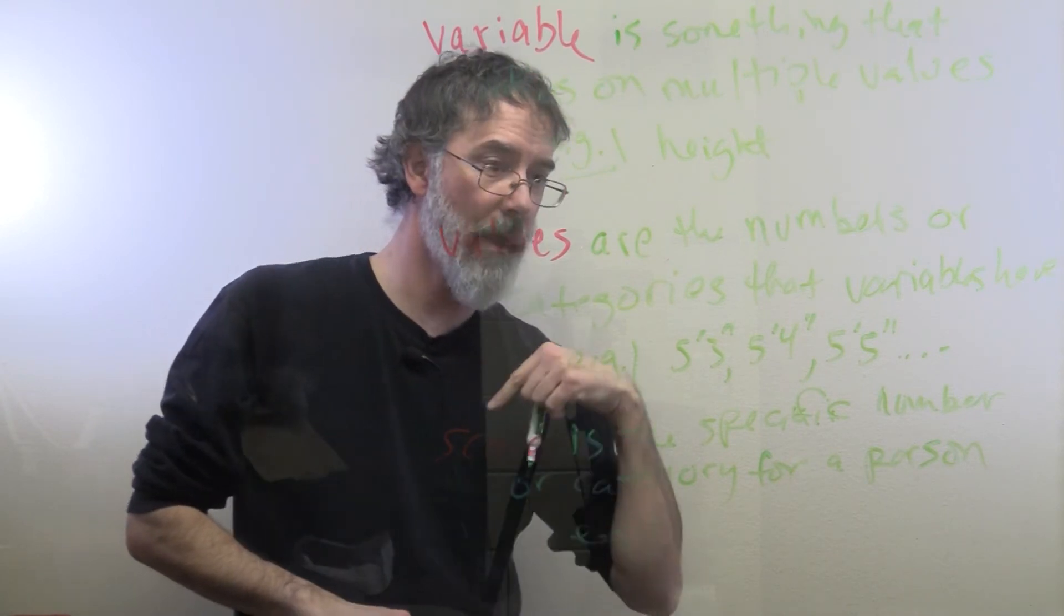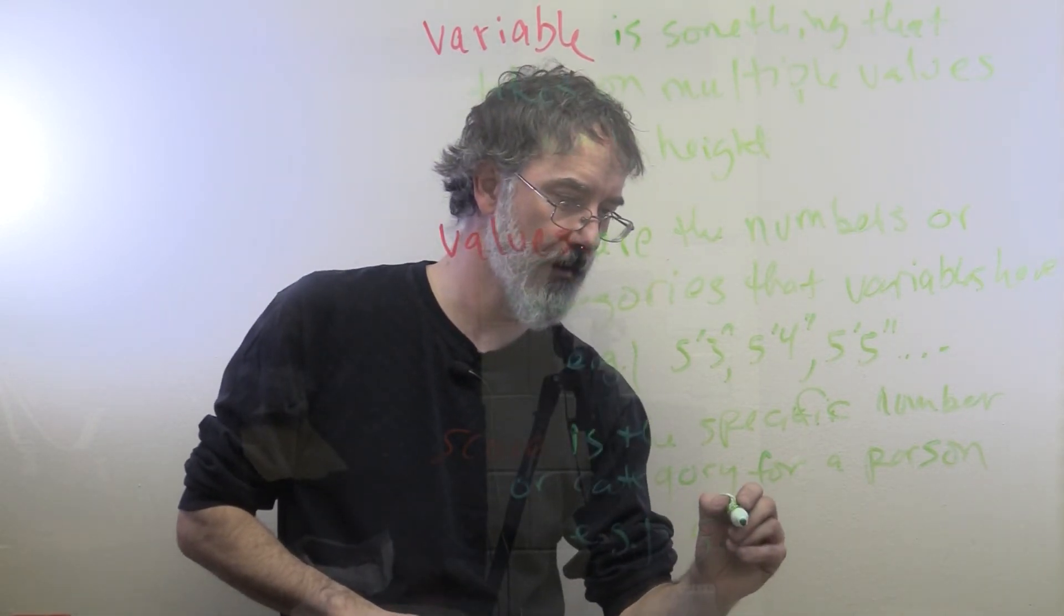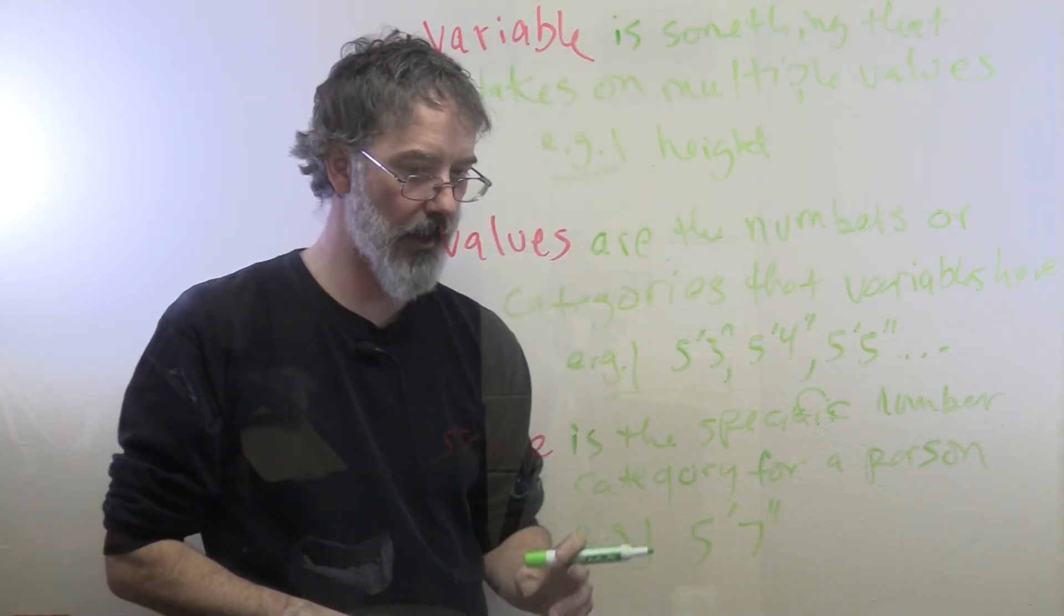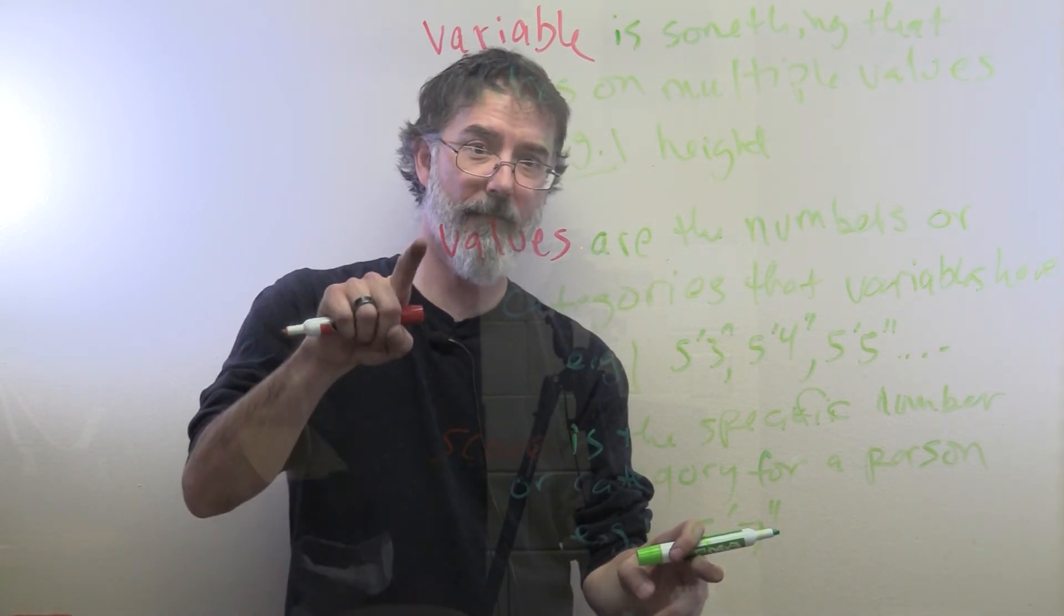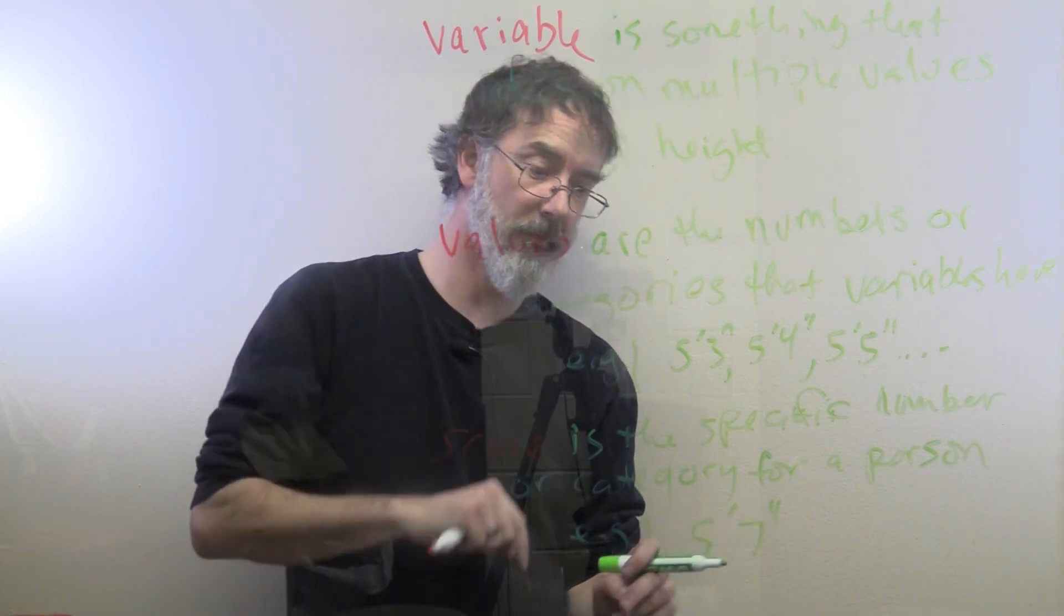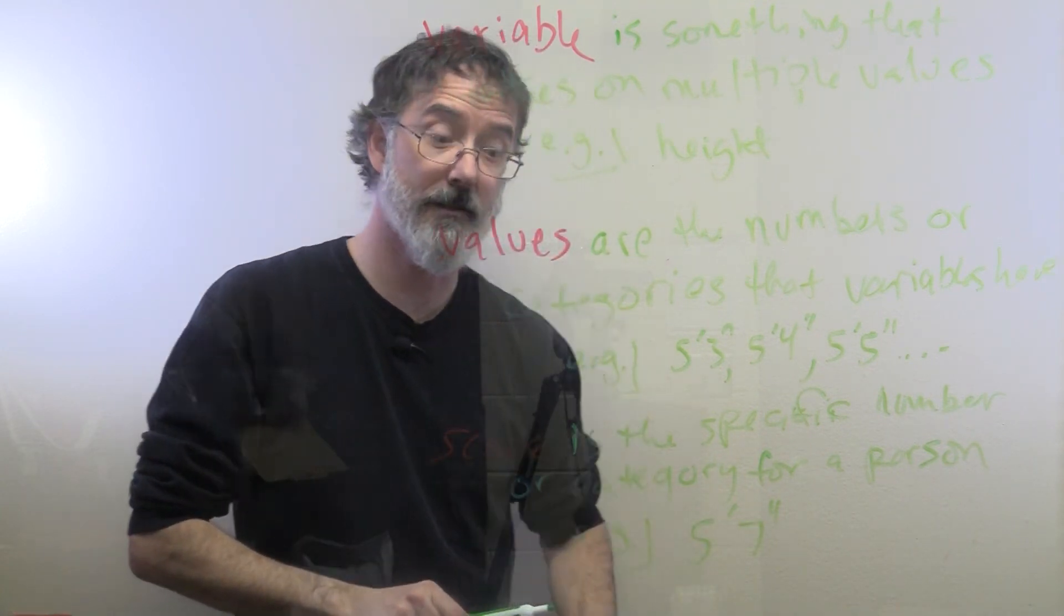For example, my height is, I think it is 5'7". So that is my score, 5'7"—the value that is my score on the variable of height is 5'7".